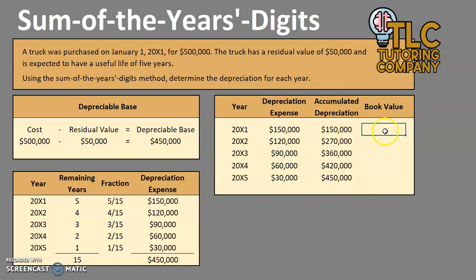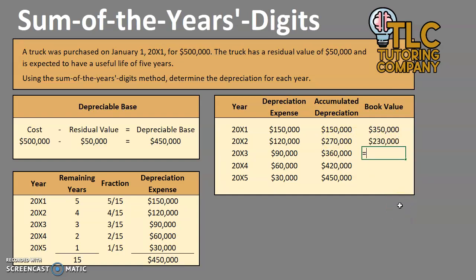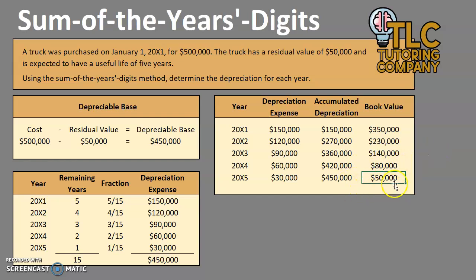The last step is to figure out the book values at the end of each year. Book value is always the cost of the asset minus accumulated depreciation. For year one: $500,000 minus $150,000 gives a book value of $350,000. We apply the same formula — cost minus accumulated depreciation — for each subsequent year. At the end of the asset's life, the book value should equal the residual value.